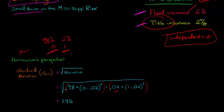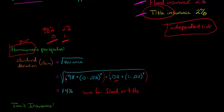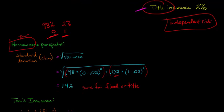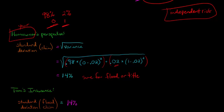So the standard deviation of the claim is 14%. From the perspective of the homeowner, this is the same whether we're calculating for flood or title insurance — we'd calculate exactly the same. Now from the perspective of the insurance company — Tom's Insurance — the standard deviation with the flood claim is going to be exactly the same as from the homeowner's perspective: 14%, calculated the exact same way.